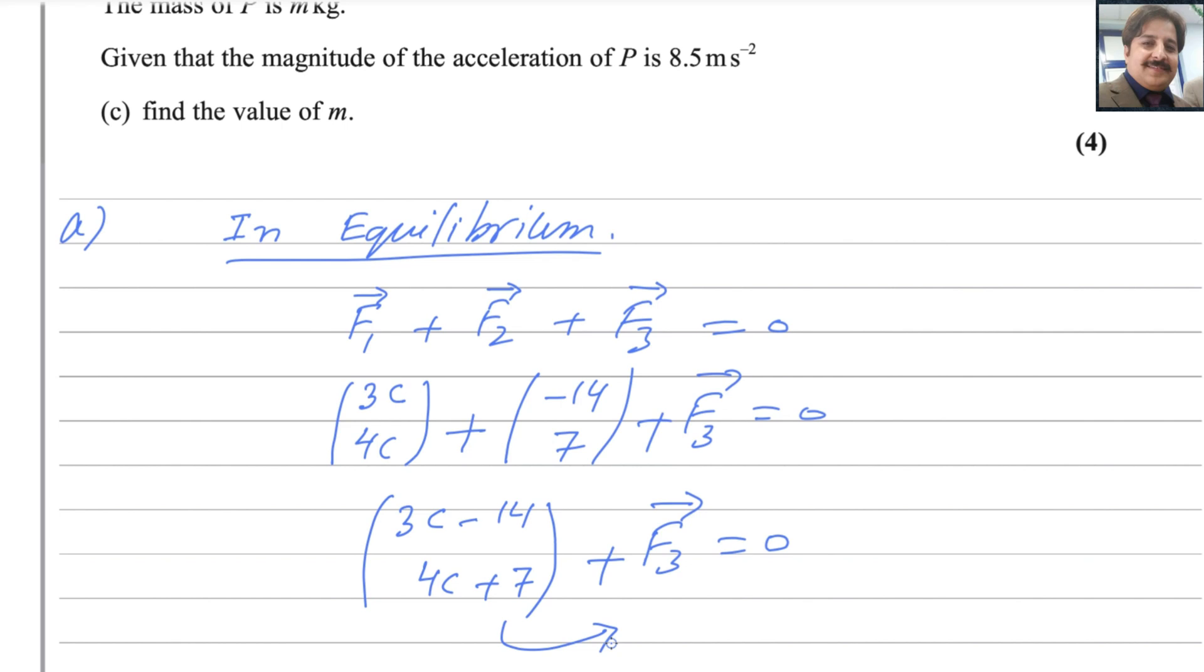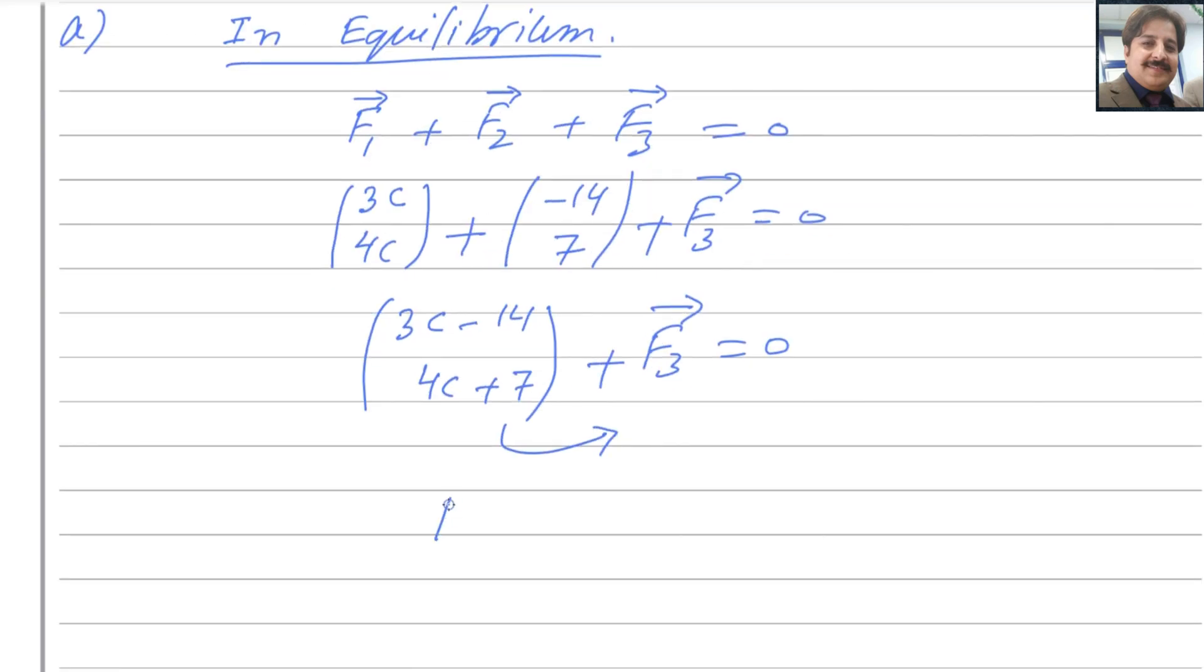Now you can move these vectors to the right side, so it becomes negative. So F3 will be equals to minus of 3c minus 14, 4c plus 7. This minus will be applied there. So you can write as 14 minus 3c and minus 7 minus 4c.